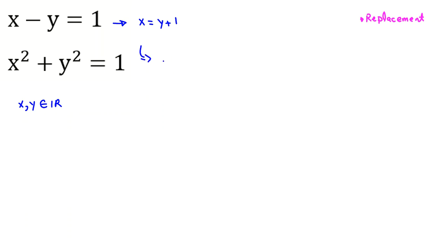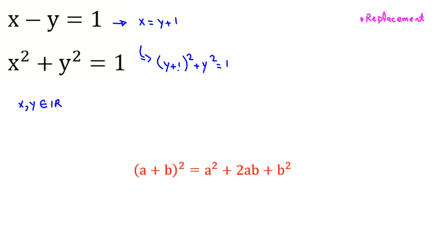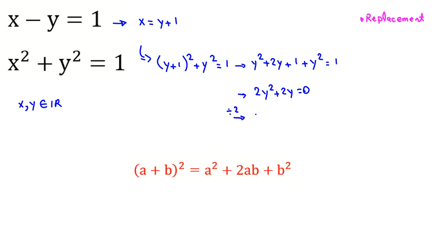Replacing x with y plus 1 in the second equation gives us y plus 1 squared plus y squared equals 1. Expanding using the identity, y plus 1 squared equals y squared plus 2y plus 1, so we get 2y squared plus 2y plus 1 equals 1. The 1s cancel, and dividing by 2 gives y squared plus y equals 0.